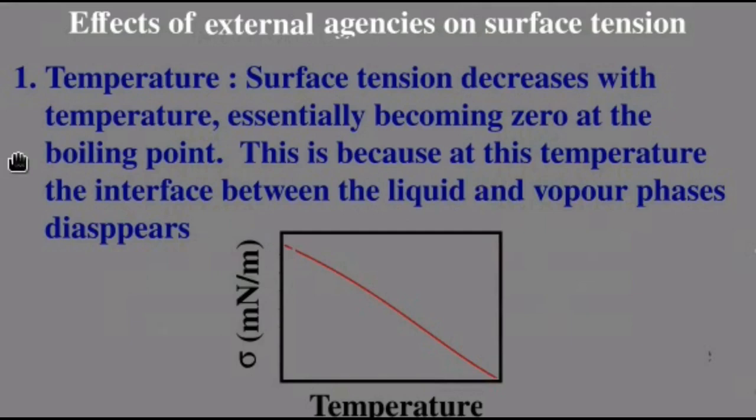Now, let us see the effects of external agencies on surface tension. First, we consider the effect of temperature. It is found that the surface tension decreases with temperature, essentially becoming zero at the boiling point. This is because at this temperature the interface between the liquid and the vapor essentially disappears. So, as the temperature increases the surface tension steadily decreases and at the boiling point it is zero.